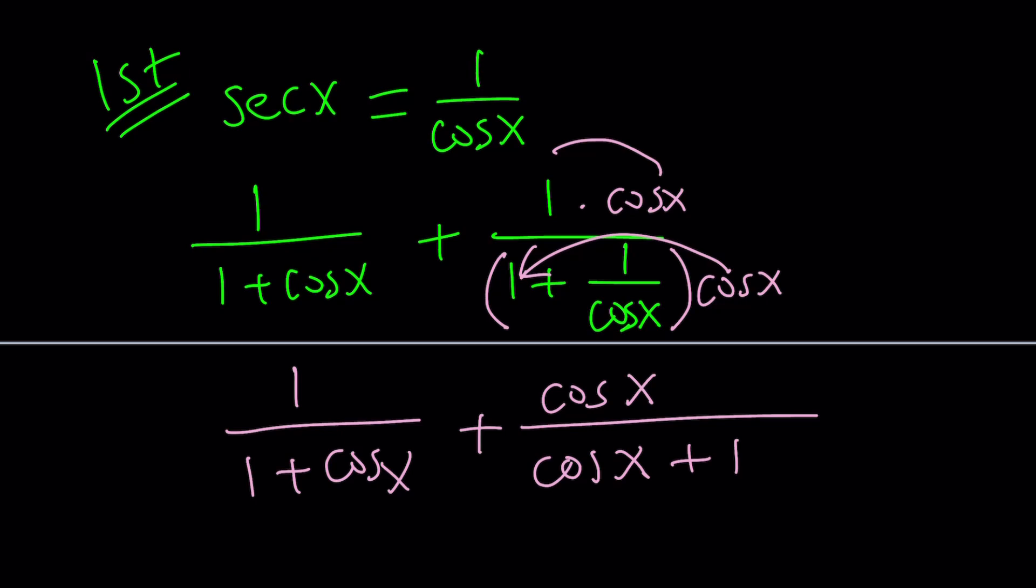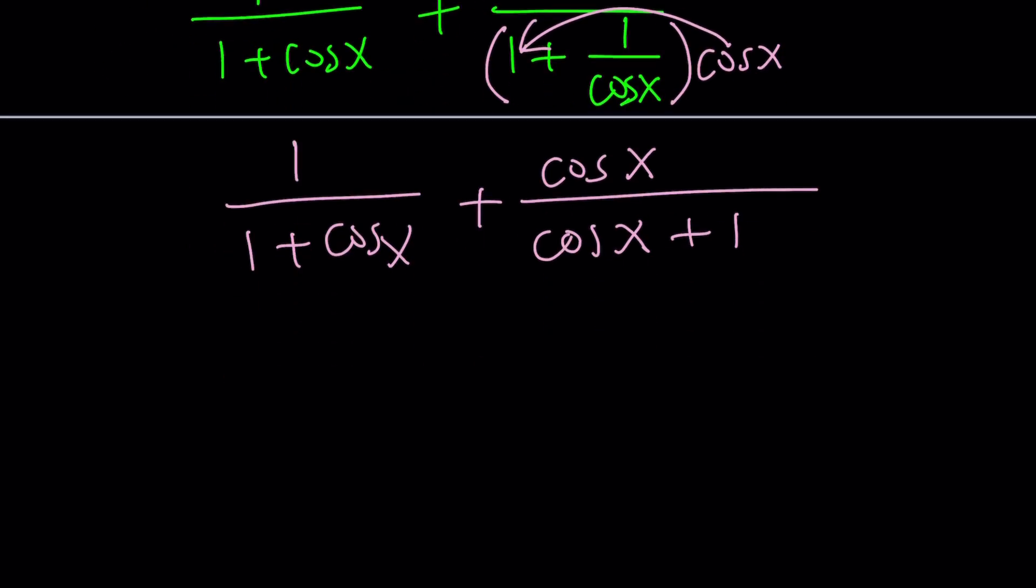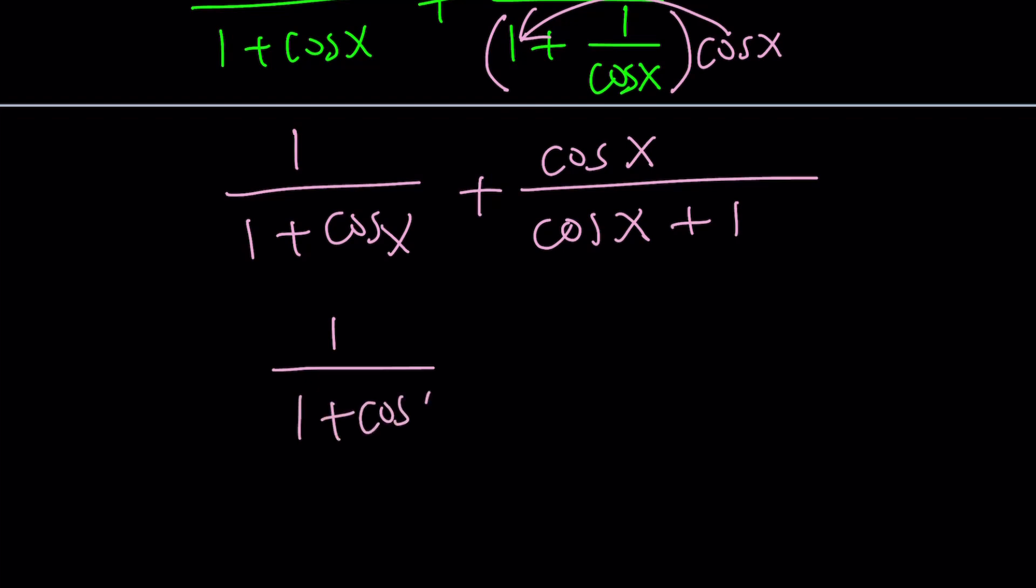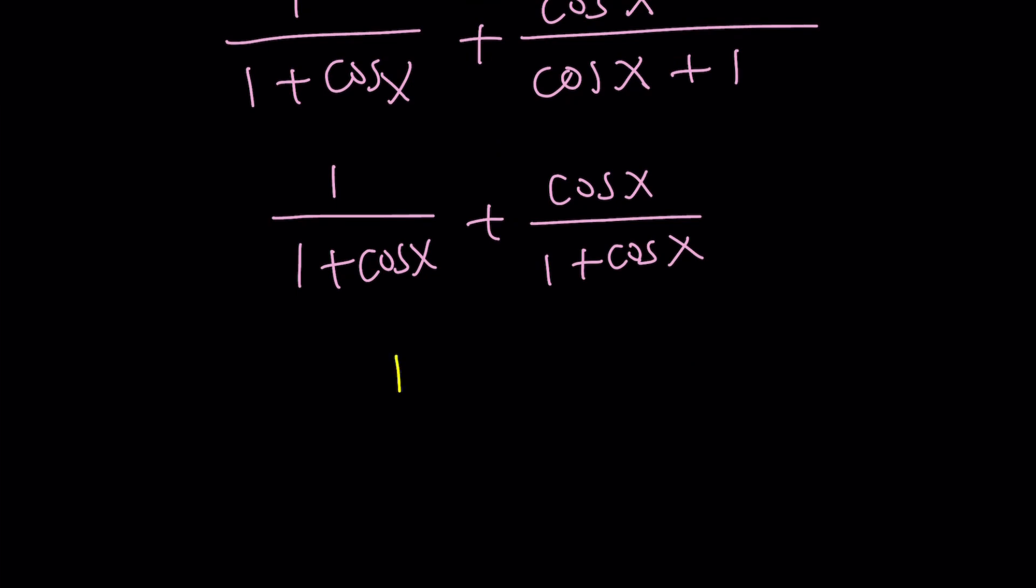And what do you notice? You notice that these two fractions have the same denominator. They kind of look different, right? But if you write the second denominator as 1 plus cosine x, or cosine x over 1 plus cosine x, now you'll see that they have the same denominator, which means we can just add the numerators. That's going to give us 1 plus cosine x divided by 1 plus cosine x. And that should equal 1.